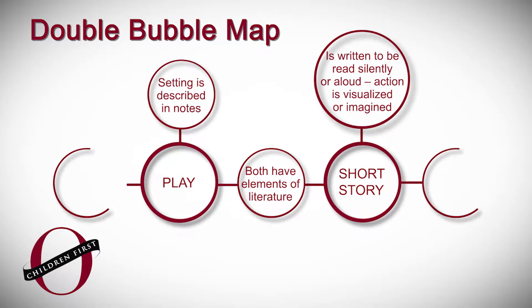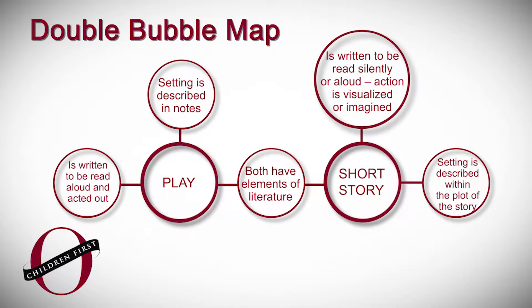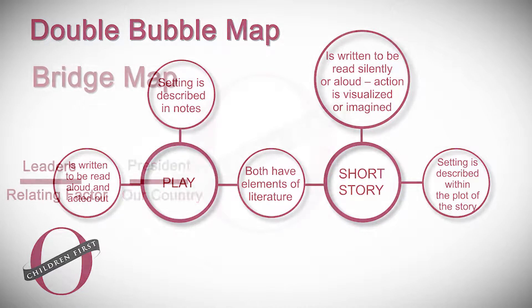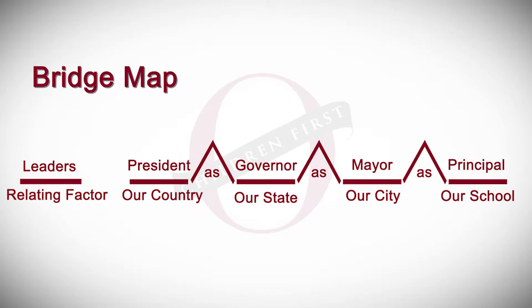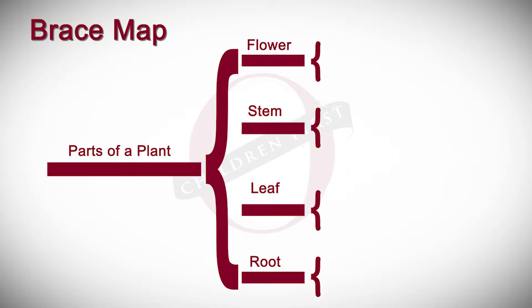Each map corresponds to a different thinking process or strategy. Several maps we particularly like to use are the double bubble map, which asks kids to compare and contrast different information; the bridge map, which helps kids synthesize information by making analogies; and the brace map, which asks kids to think about whole-to-part relationships. All of these maps are really utilized to help kids have a similar thinking process.